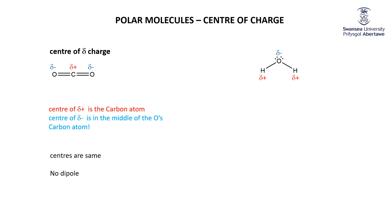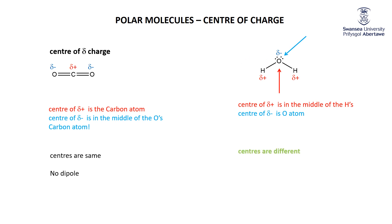For water, the center of the slightly positive charge lies right in the middle of the two hydrogens. The center of the slightly negative charge is at the oxygen atom. Those centers are different, and therefore we have a dipole. So the second method: find where the center of the slightly negative atoms is and where the center of the slightly positive atoms is. If they're the same, as with CO₂, there's no dipole; if they're different, there is.